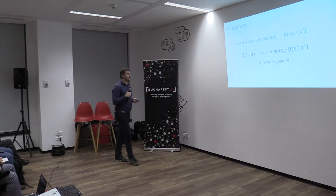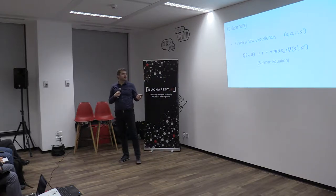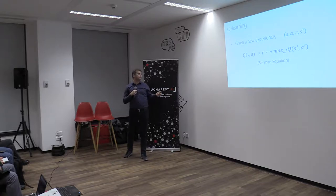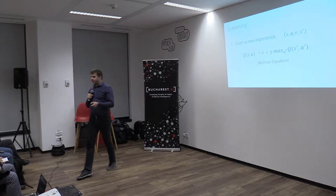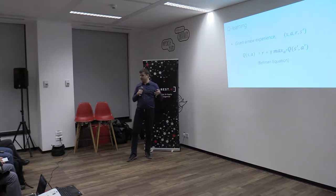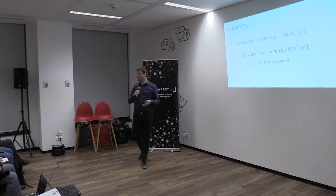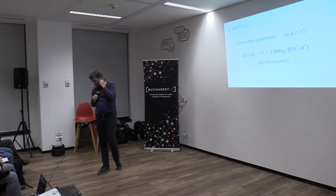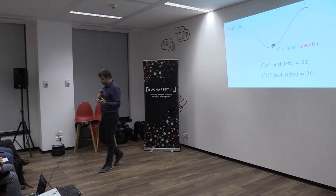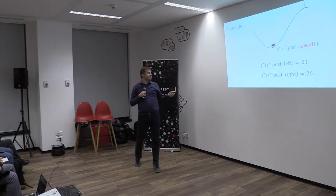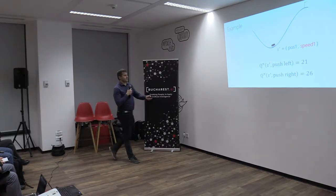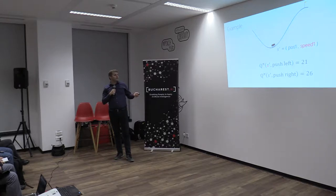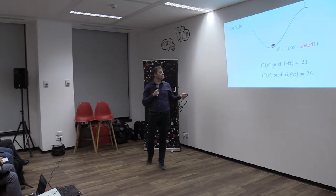How can we actually learn this Q function? There is a very useful equation called the Bellman equation. It states that if our agent is in a specific state, takes an action, gets a reward, and a new state from the environment, then there is a formula to update the Q value for that specific state-action pair: it should equal the reward just received plus the maximum possible Q value for the new state over all possible actions from that new state, multiplied by the discount factor. Say we have estimated that Q for state s-prime — with a specific position and speed — is 21 for pushing left and 26 for pushing right.